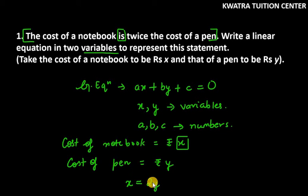x is equal to 2y. So the statement or the final linear equation is x minus 2y equals zero. This is the linear equation in two variables. This is the answer for question number 1. Thank you for watching. Have a great day.